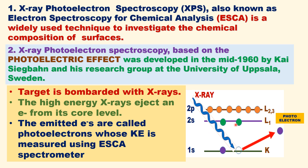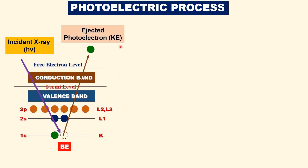The emitted electrons are called photoelectrons, whose kinetic energies are measured and recorded using an ESCA spectrometer. PES is based on the photoelectric effect. The incident X-ray ejects an electron from the core shell. We have a valence band, conduction band, Fermi level, and the electron is free to move above this level.